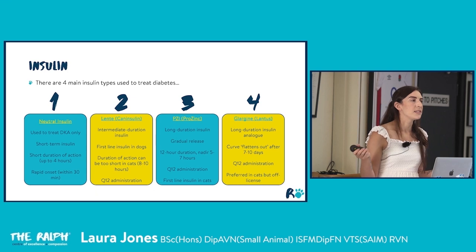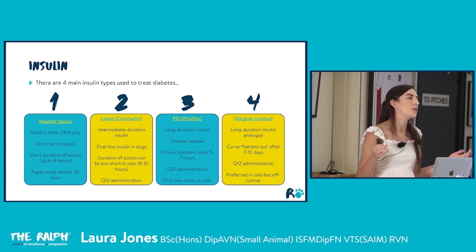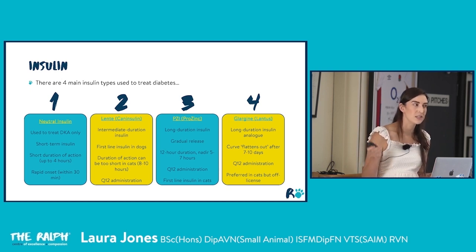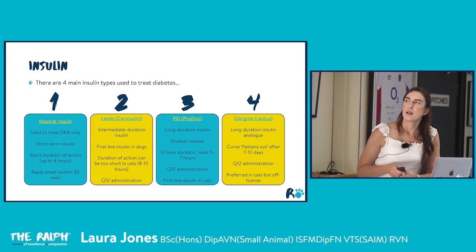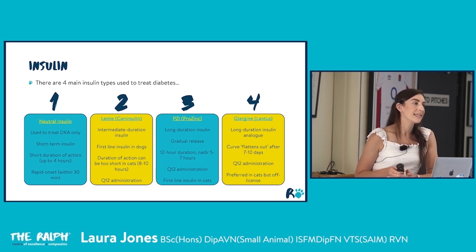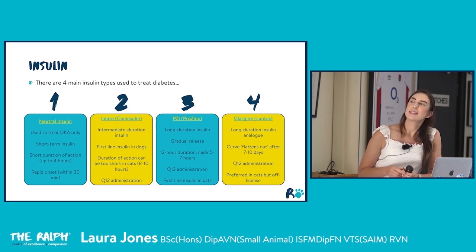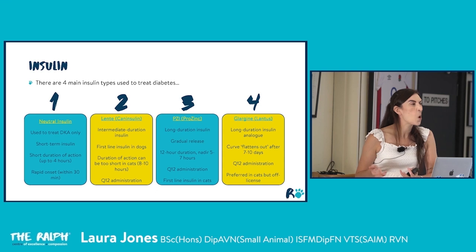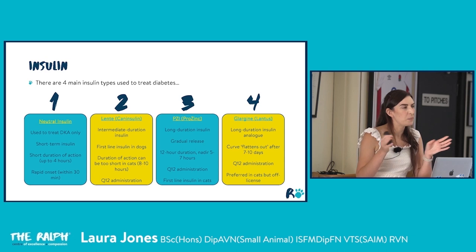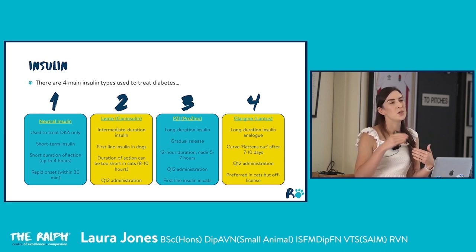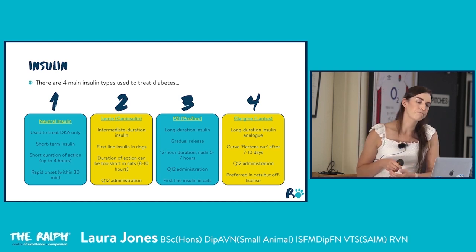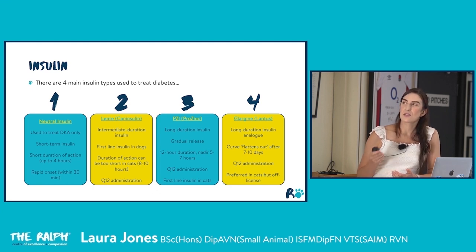For non-ketoacidotic diabetics, caninsulin or prosinc are the starting insulins. Caninsulin is generally preferred for dogs — it's an intermediate-duration insulin lasting around 12 hours in dogs but only 8 to 10 hours in cats, given twice daily. This shorter duration in cats creates a window where glucose toxicity can occur between injections. Prosinc lasts longer, making it a better option for feline patients, and we generally see better diabetic control with it.